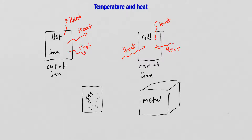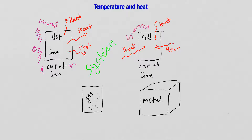Everything else that is not the system is called the environment. For the cup of tea, the cold can of Coke, and the gas in the cylinder, the surroundings — which typically is just room air — are called the environment. When dealing with processes where heat flows, we talk about the system and the environment around it.